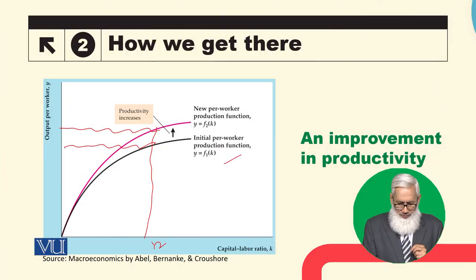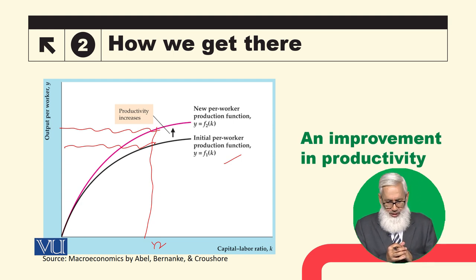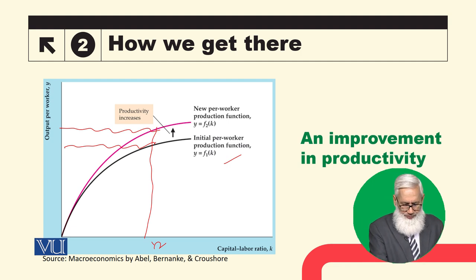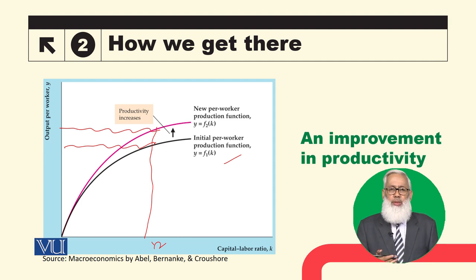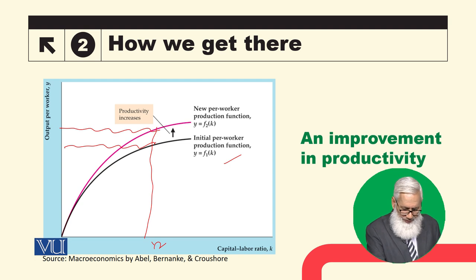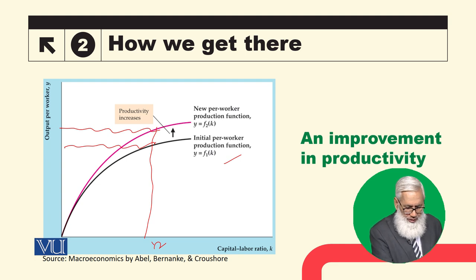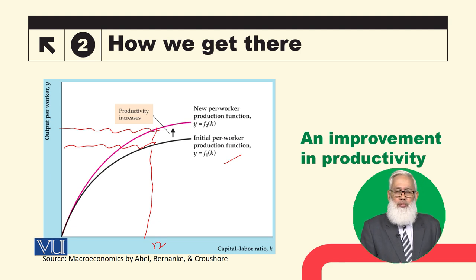This is the fundamental determinant of long-run living standards. Looking at this graph, the black graph is the initial production function. It shows the relationship between the capital-labor ratio and output-worker ratio. The productivity improvement will shift this production function upward. For the same level of k, initially we had a certain level of output, but due to this improvement in technology or productivity, now we are able to have more output with the same level of inputs. This is called productivity growth.